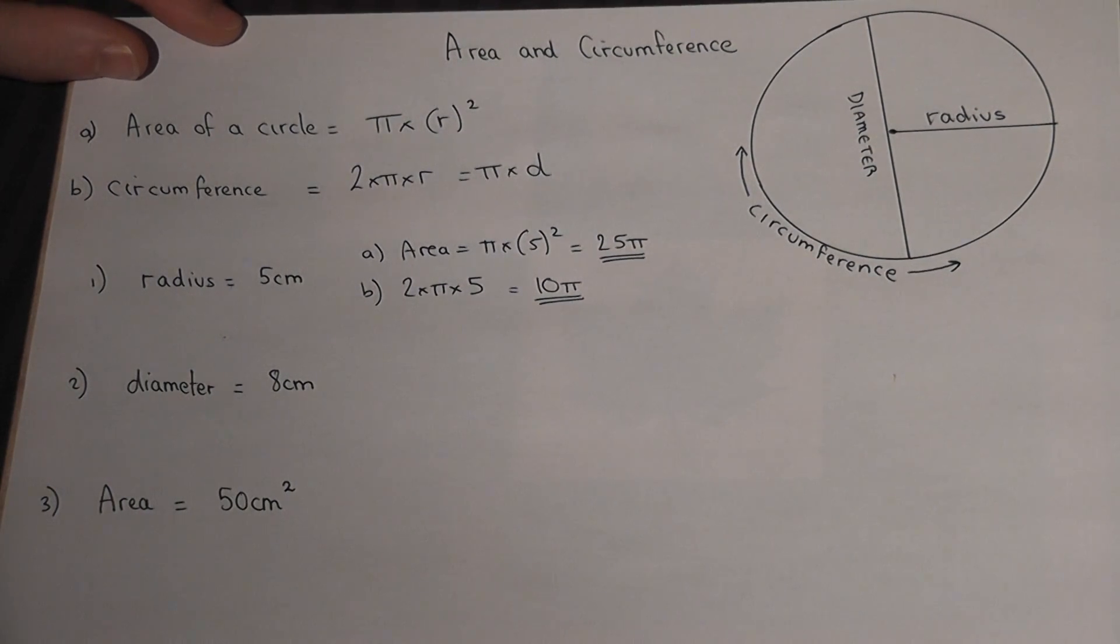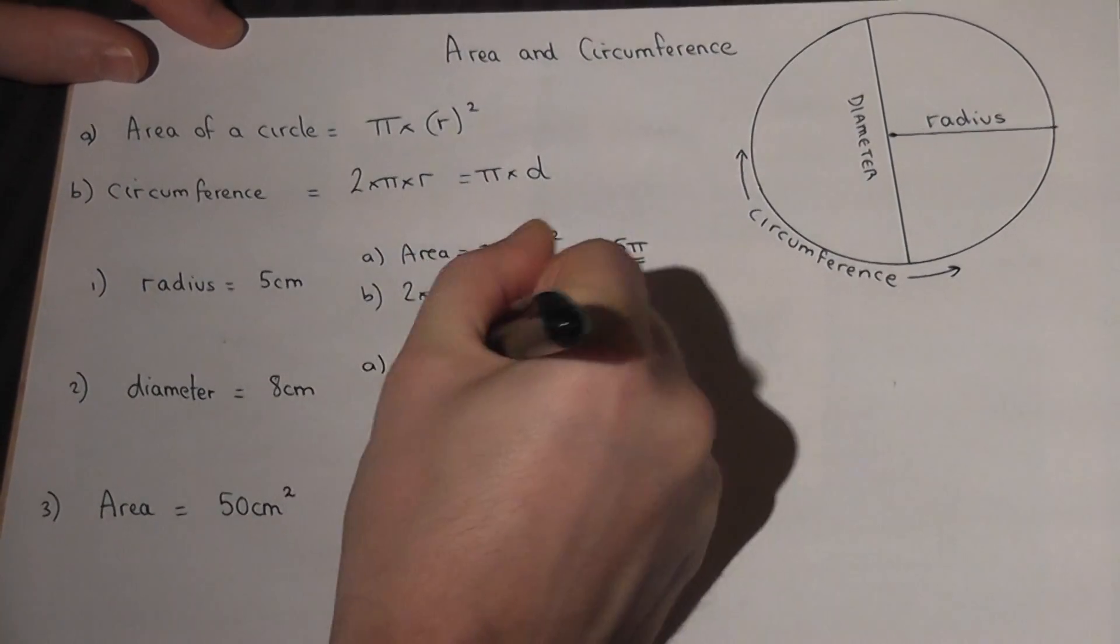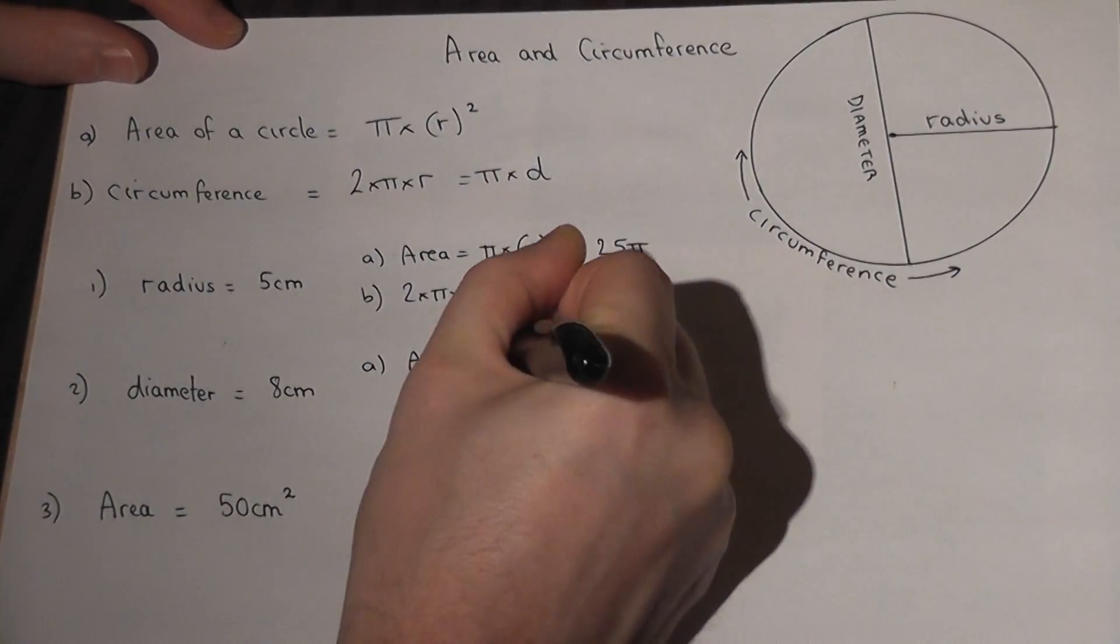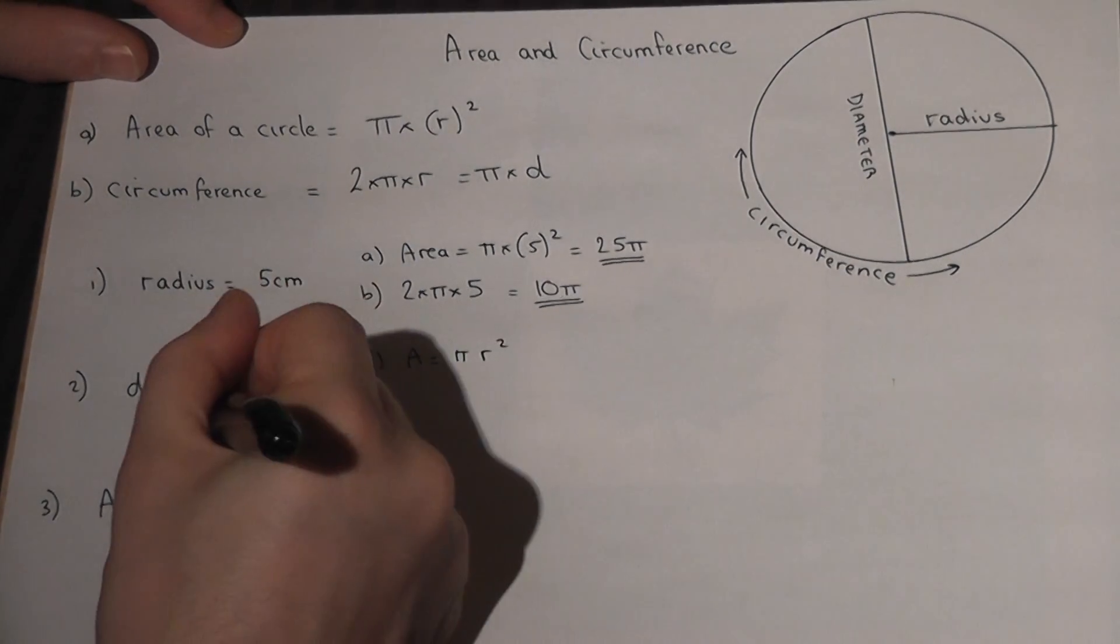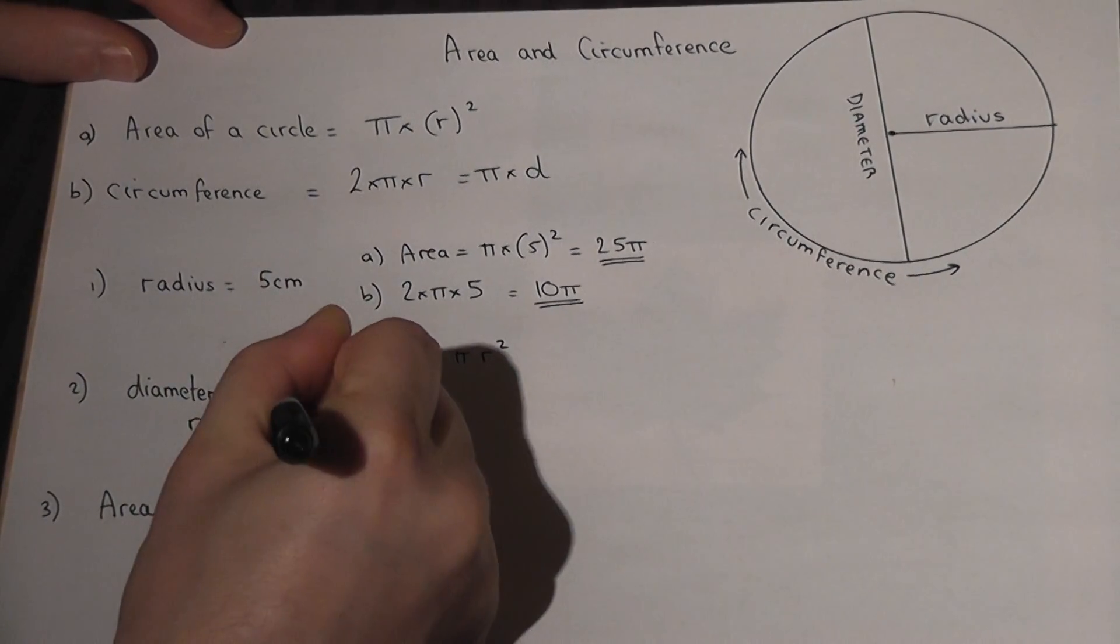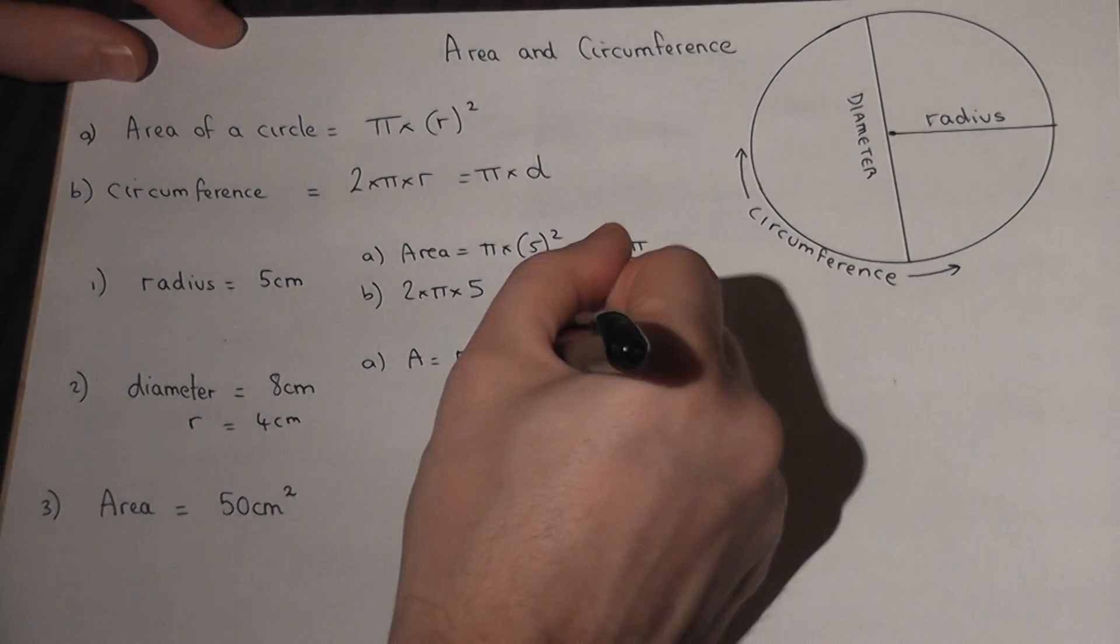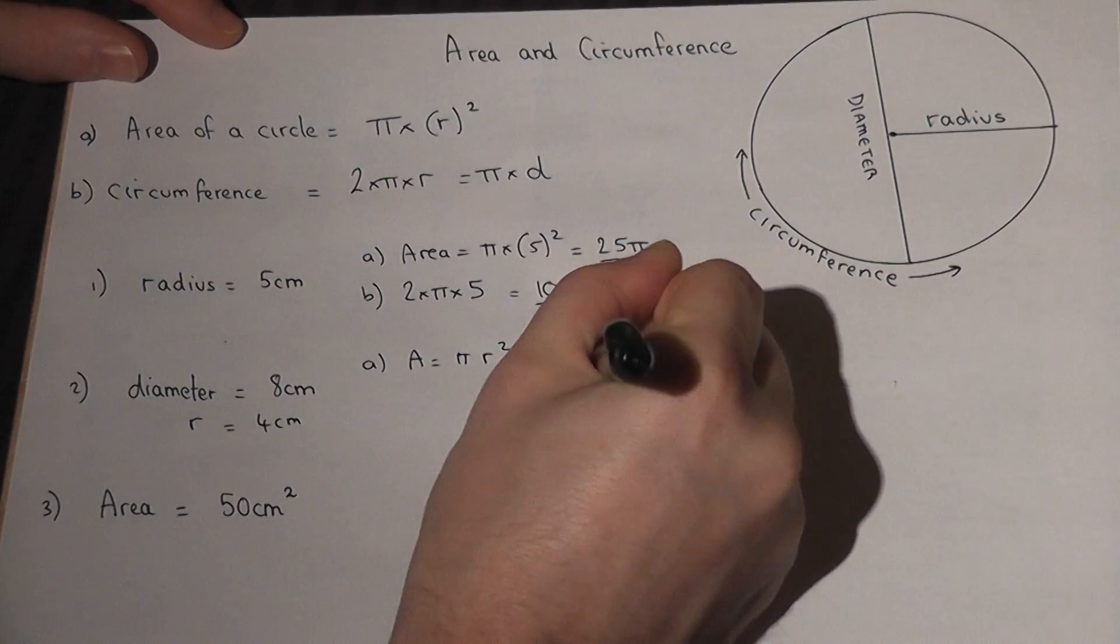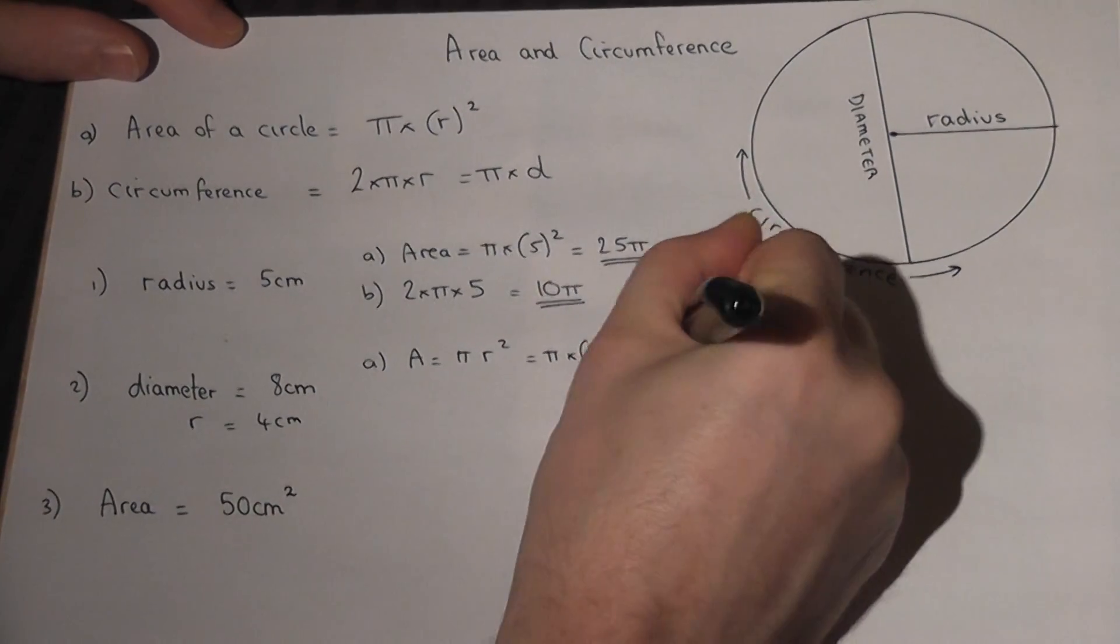Now, if you are told the diameter and you want the area, the area is π times radius squared. If the diameter is 8cm, then the radius must equal 4cm. It's always half the diameter. So it must be π times 4 squared. 4 squared is 16, so it's 16π.